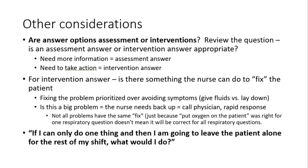NCLEX-style questions can seem like more than one answer is correct. Ask yourself: is this a big problem? Does the nurse need backup — call a physician or a rapid response? Remember, not all problems have the same fix. For example, a patient with a spinal cord injury with a respiratory rate of six breaths per minute is different from a patient with pneumonia and an SpO2 of 89%. Oxygen makes sense for the pneumonia patient to bring up their SpO2, but putting oxygen on the spinal cord patient doesn't fix the underlying breathing problem.